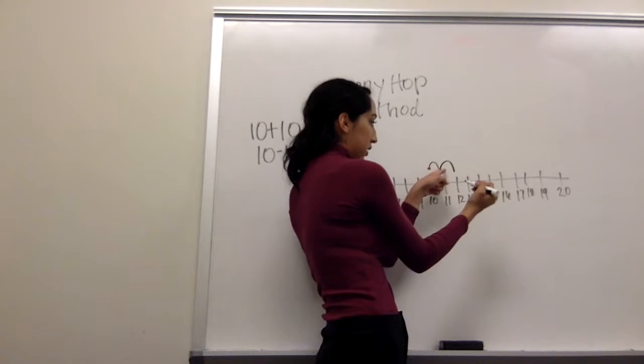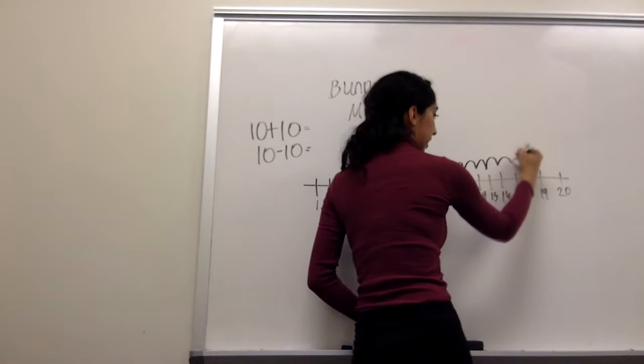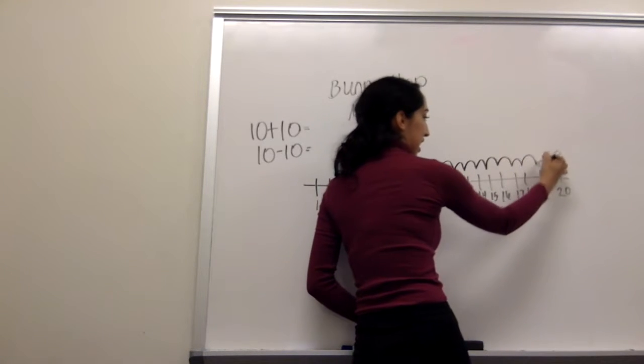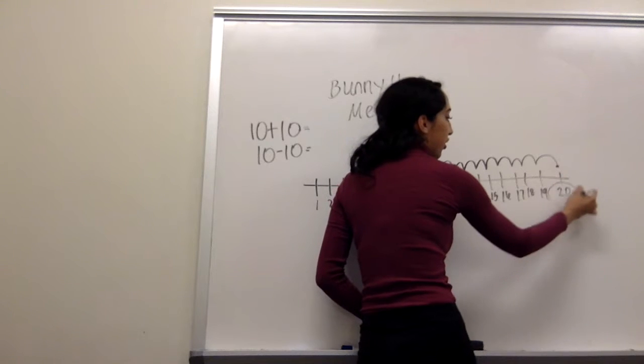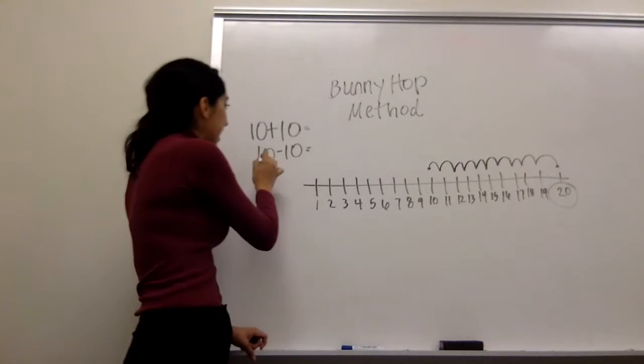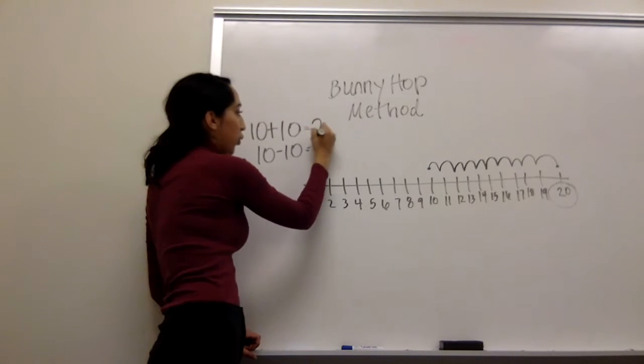1, 2, 3, 4, 5, 6, 7, 8, 9, 10. Then you draw another dot and you circle your number. So 10 plus 10 equals 20.